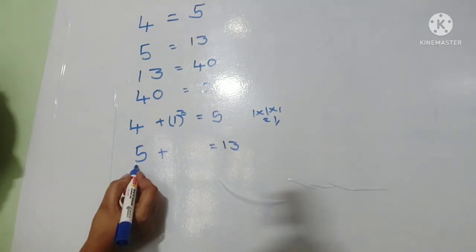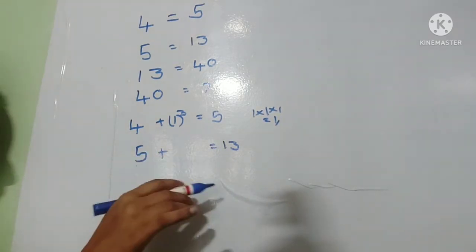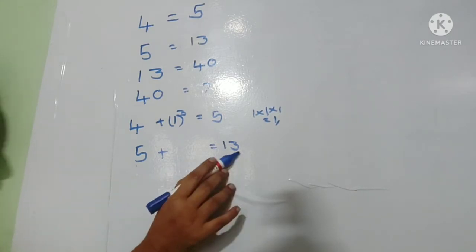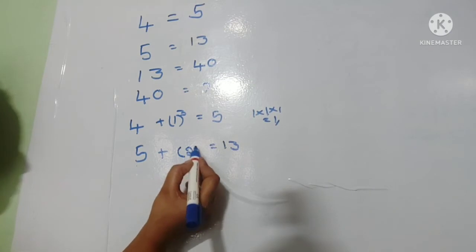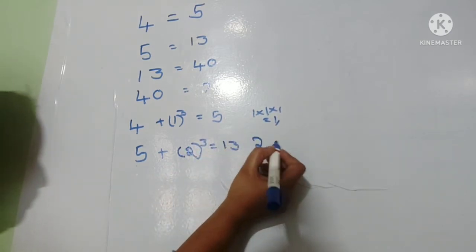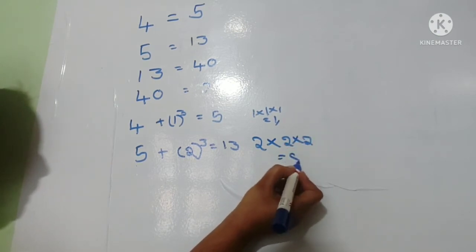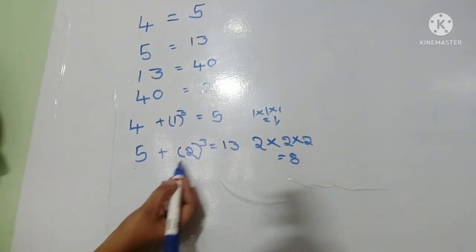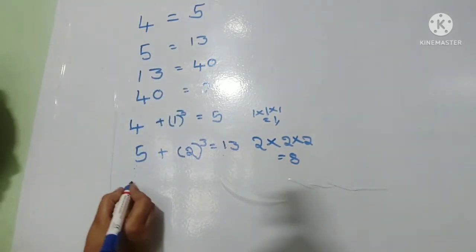Here five, we add extra: 2 cube. Two into two into two we get eight. So five plus 2 cube equals thirteen. Next, thirteen.